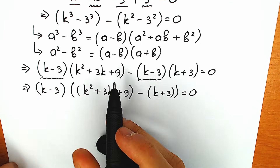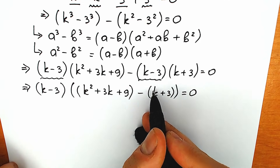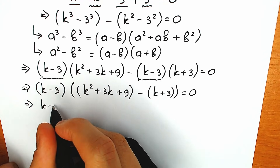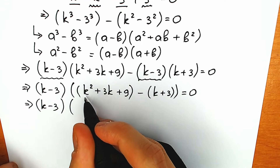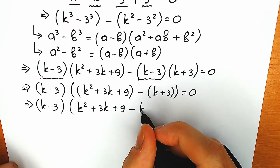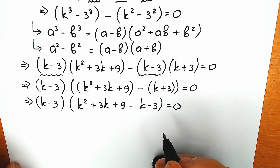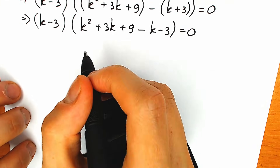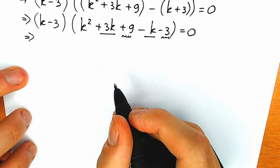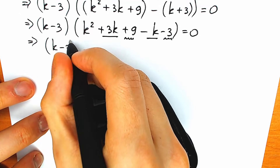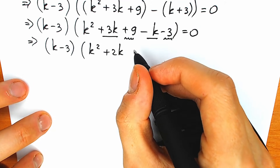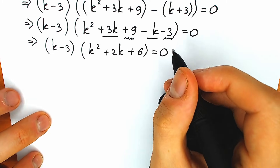We have k minus 3, and this second parenthesis we can simplify by opening it. Right here we have a negative sign, so let's get rid of that parenthesis. So we have k minus 3 times k squared plus 3k plus 9 minus k minus 3, equal to 0. We can simplify: 3k minus k gives plus 2k, and 9 minus 3 gives plus 6.